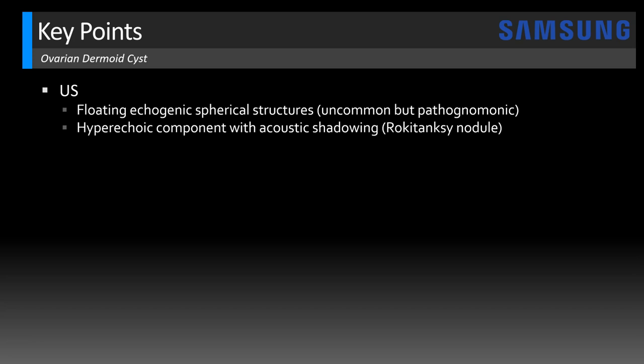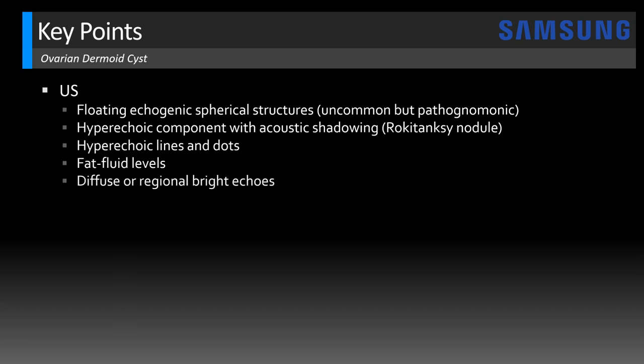The Rokitansky nodule can sometimes cause the tip of the iceberg sign, where you see an echogenic mass that's shadowing out the rest of the dermoid — that's often where the bone and teeth are located. Sometimes you can have hair growing out of the Rokitansky nodule, and that hair will look like hyperechoic lines and dots — the dot-dash appearance, sometimes also called dermoid mesh. You might also see fat-fluid levels, because sebum is semi-solid at room temperature but liquid in the body, so you can see floating hyperechoic liquid fat. You might also get non-specific diffuse or regional bright echoes within the dermoid cyst.